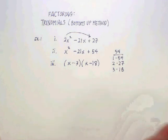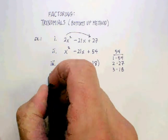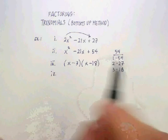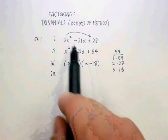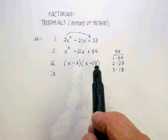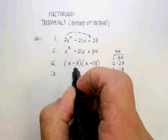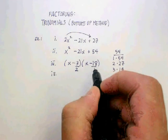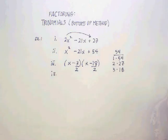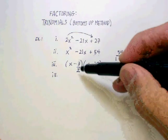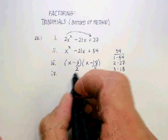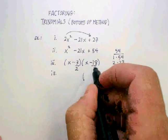Now in the bottoms-up method, the next step is kind of an odd one, but this is what you do next: since you multiplied by 2, now you have to divide by 2, and then you just go ahead and simplify those fractions.